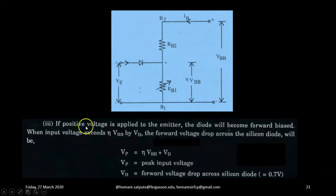Now case 3: if positive voltage is applied to the emitter, see VE has been shown in the diagram. The diode will become forward biased when input voltage exceeds eta VBB by VD, the forward voltage drop across the silicon diode.